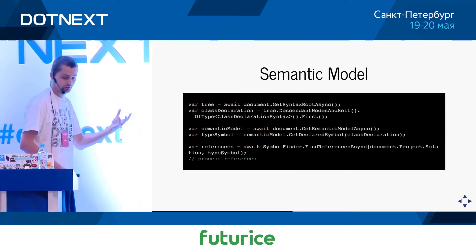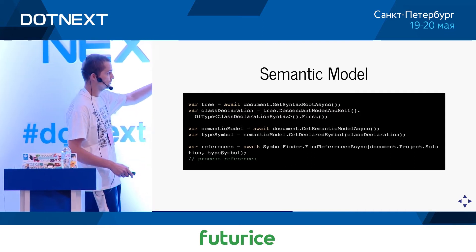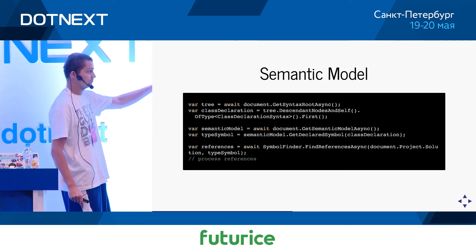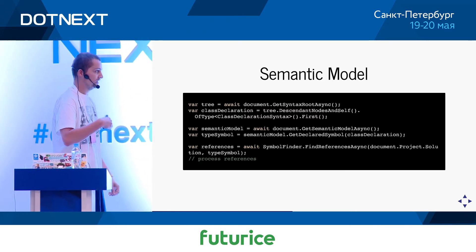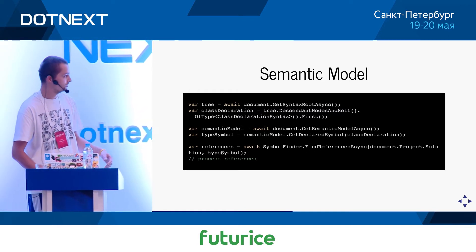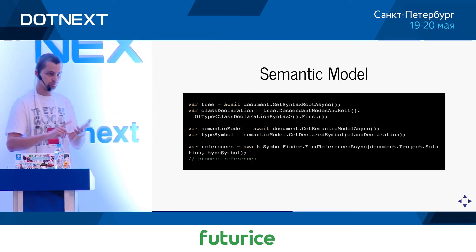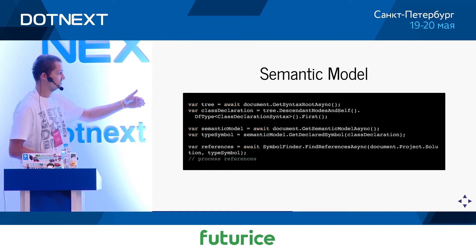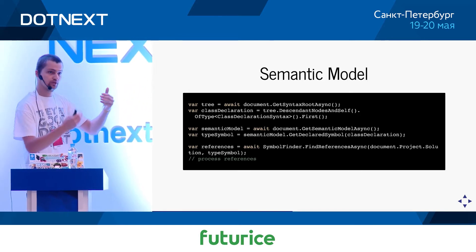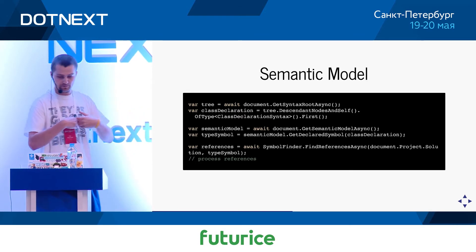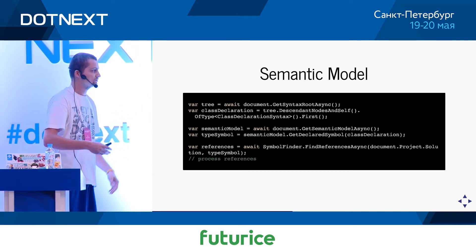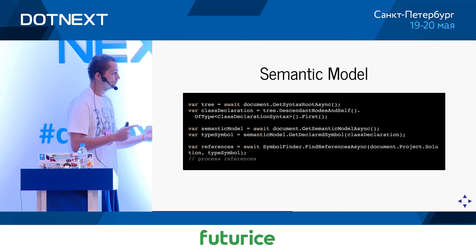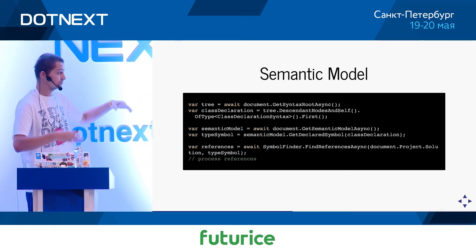Here is an example of Roslyn code that uses the semantic model. We grab a syntax tree, locate the class declaration syntax, then obtain a semantic model. At that moment Roslyn performs compilation behind the scenes — it has the symbol table, diagnostics, and can understand code flow. We grab the symbol by walking up to the semantic model and saying, 'I have this specific syntax node, please give me the symbol that corresponds to it.' Once we have the symbol, we can use Roslyn APIs like the symbol finder, which lets us find all references to a specific symbol throughout the whole solution.